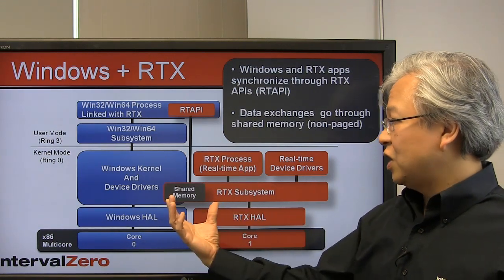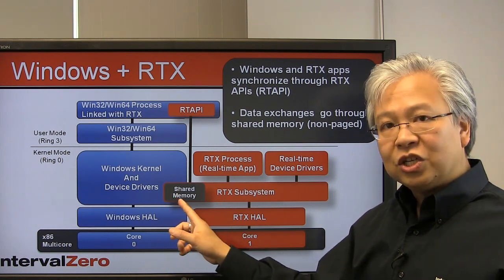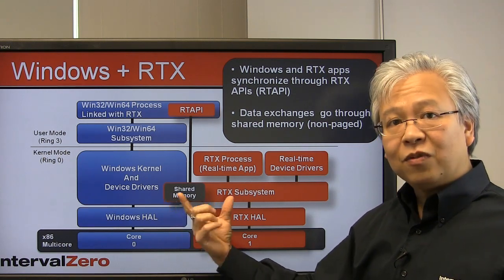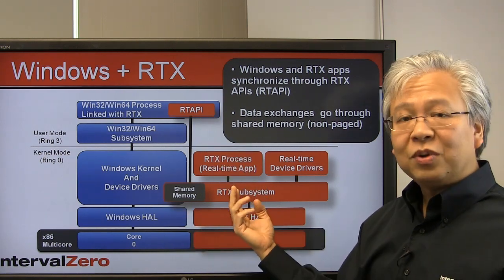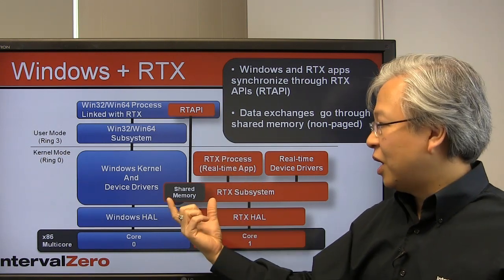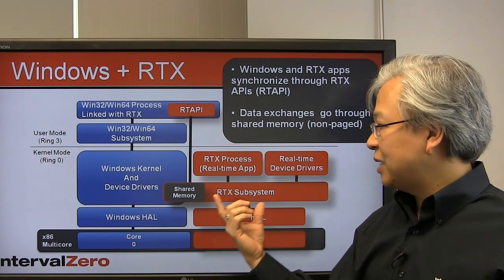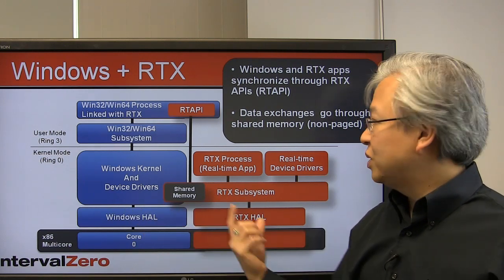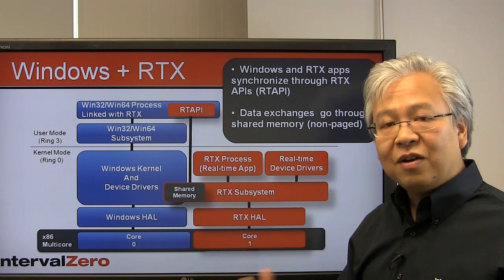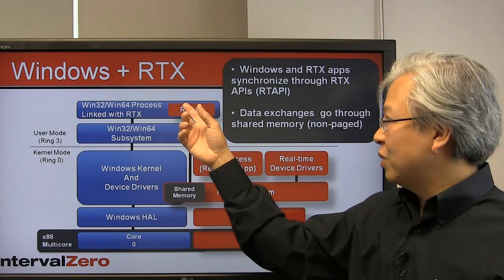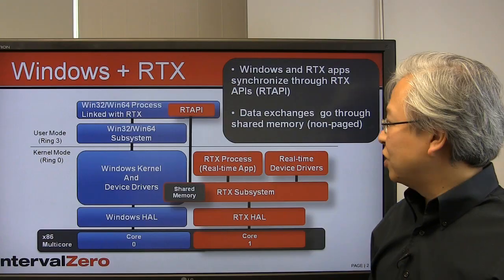For data exchange, we have a shared memory region — non-paged memory for speed. When you have events or synchronization occurring, this shared memory area lets you pass data between RTX and Windows and vice versa, providing a great way to communicate not only via synchronization but also with raw data.